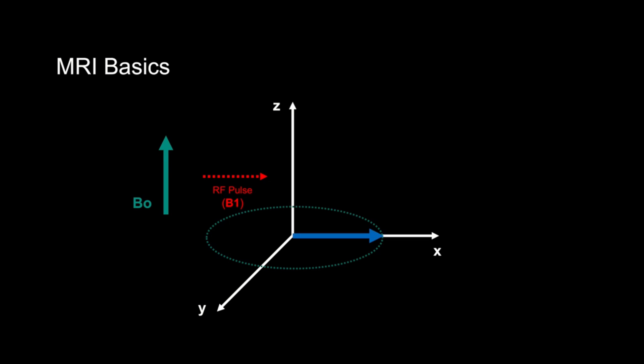And as mentioned earlier, we detect signal in the xy plane with a coil detector. The varying field in the xy plane, towards, then away, then towards, and as it precesses, is going to create a varying magnetic field that's going to create a current in this coil, which is the MRI signal itself.